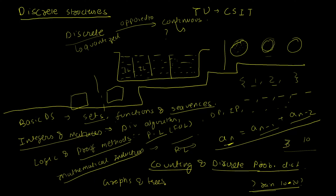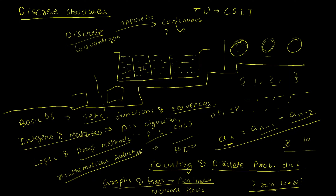The next topic is graphs and trees — non-linear, and in the case of trees, hierarchical data structures, as opposed to linear structures like stacks and arrays. We'll cover these in detail later. The final topic in our course is network flows, which involves modeling flows of anything through a network. We'll study theorems that help calculate maximum flow and where to make cuts in a network diagram to maximize or minimize flow.